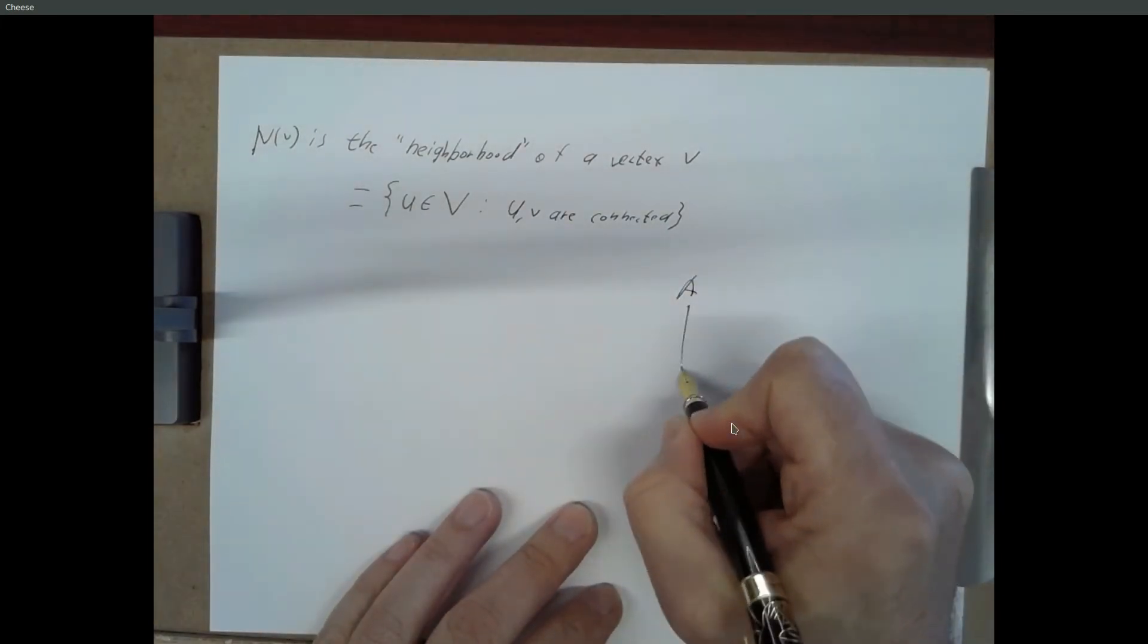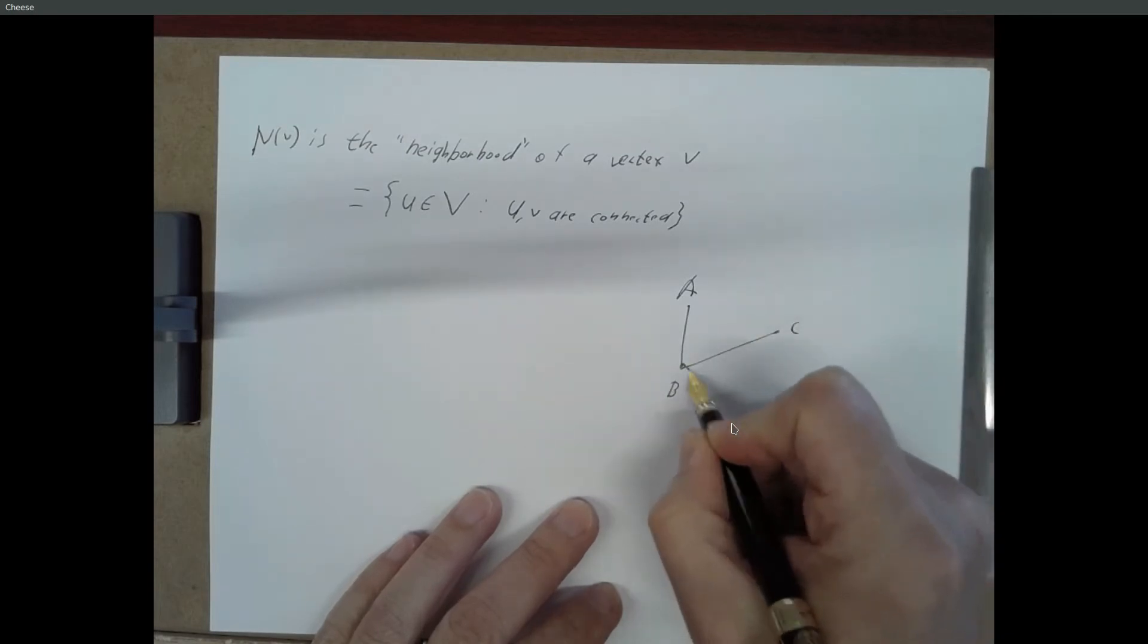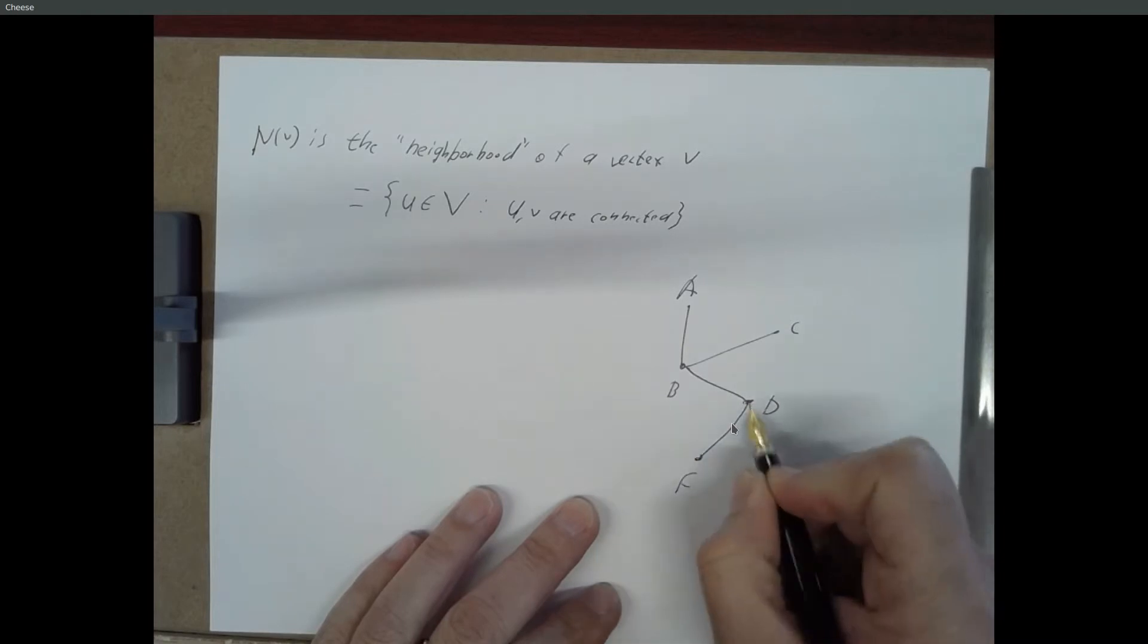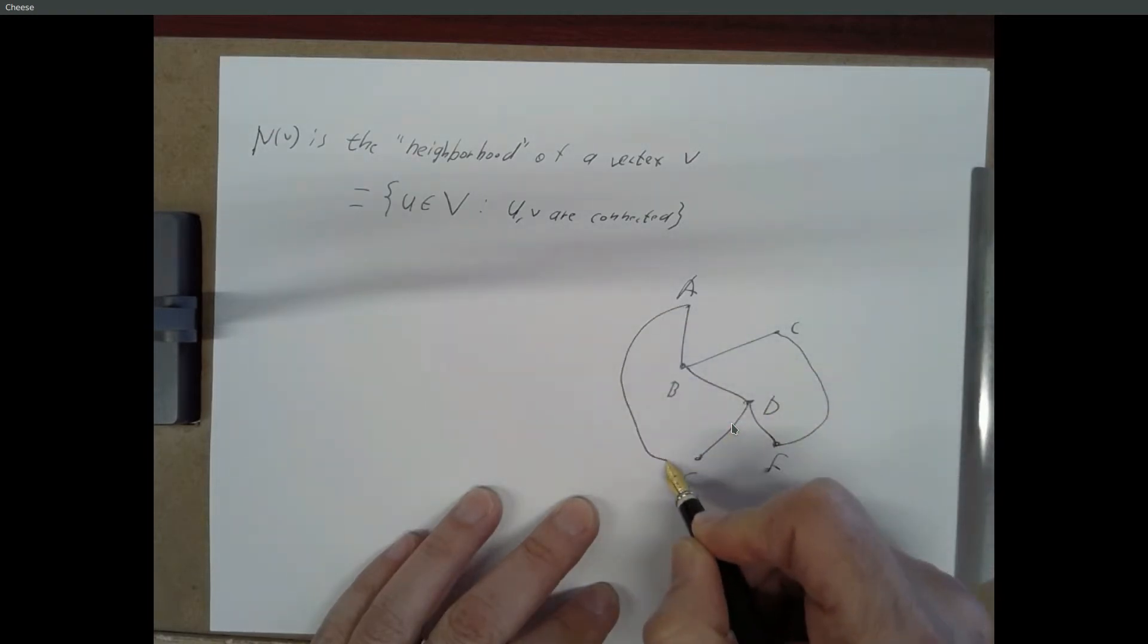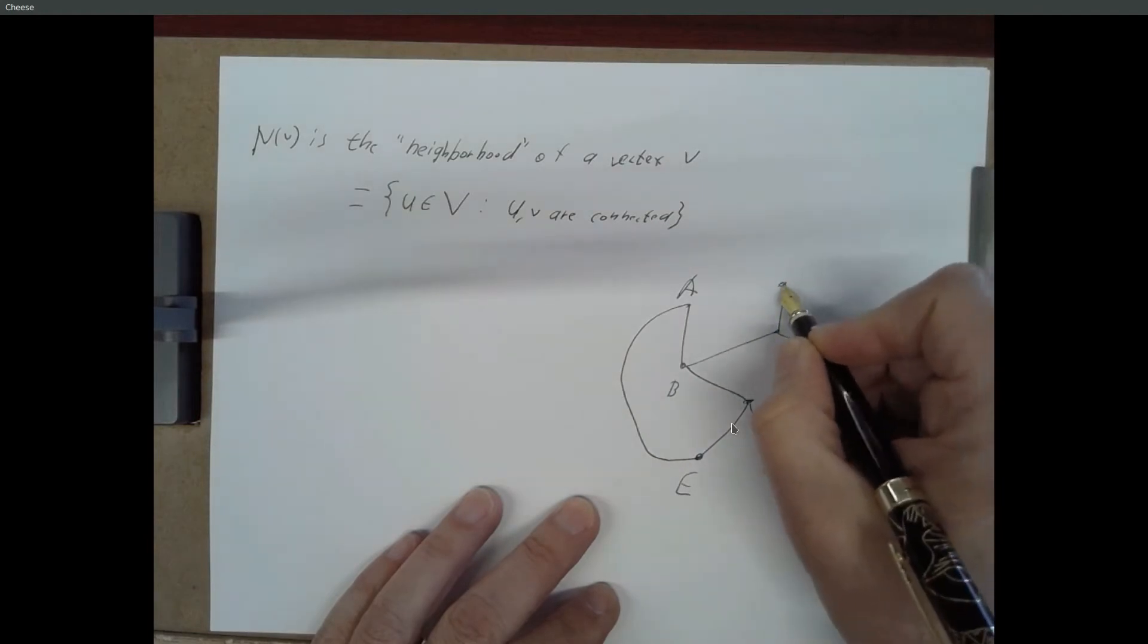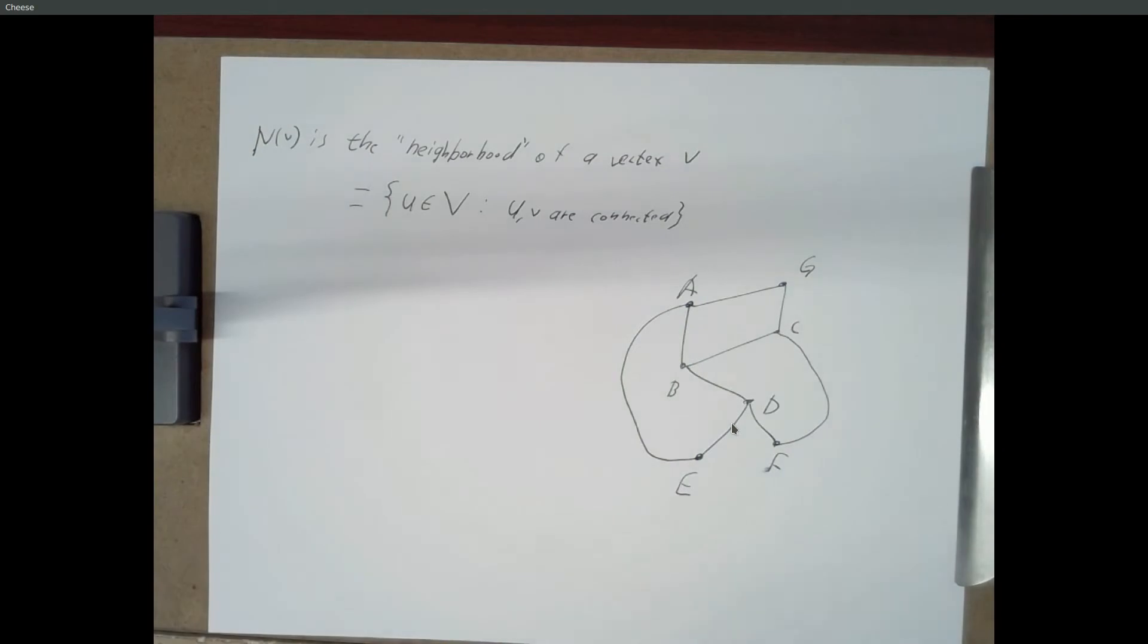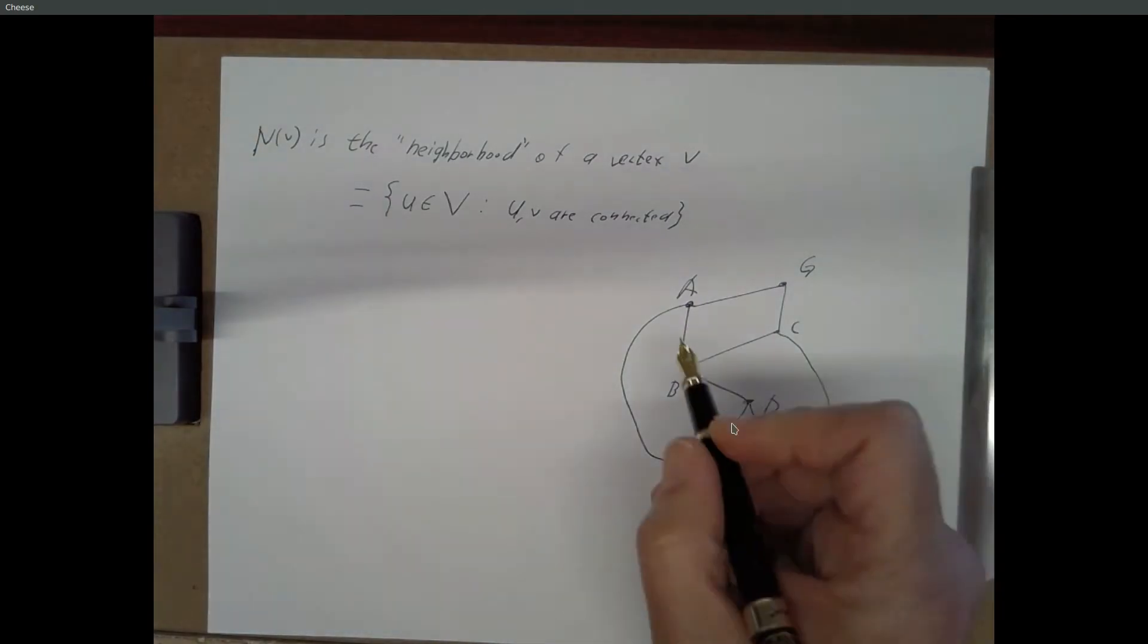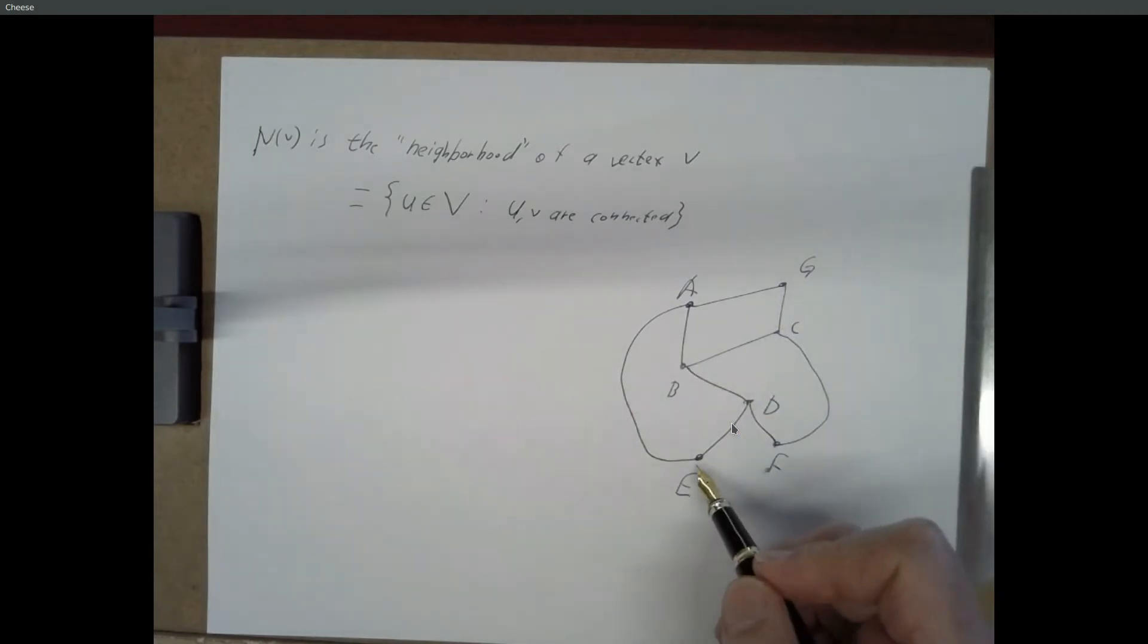So, here's A, B, C, D, E, F, and G. The neighborhood of A would be all the vertices that are connected to A. So, it looks like B, G, and E.